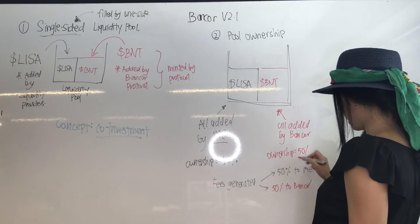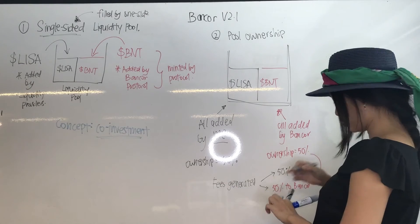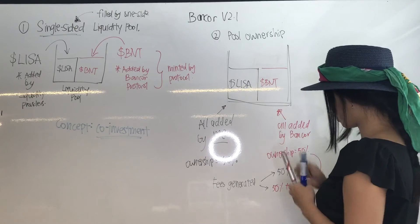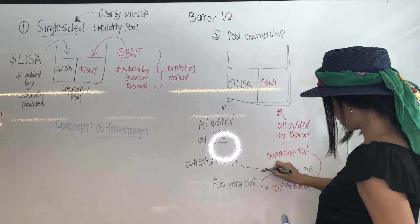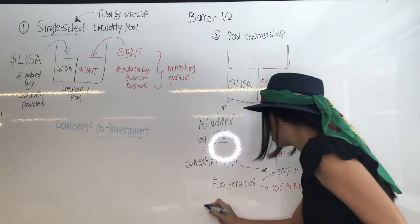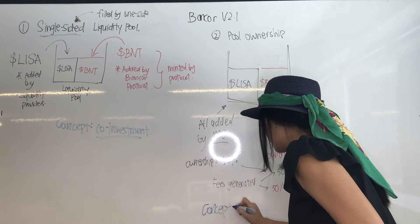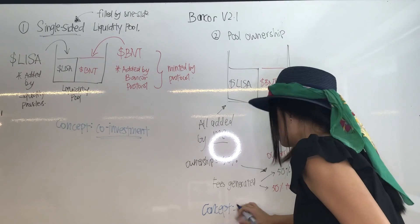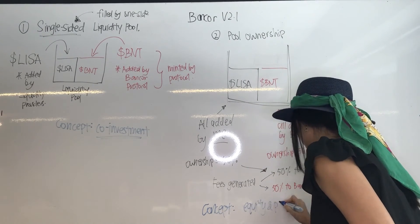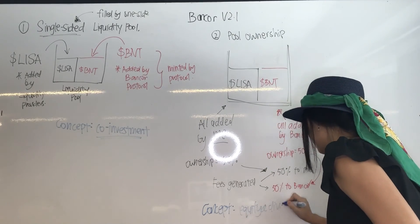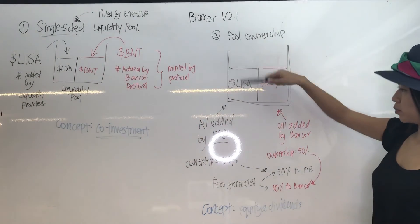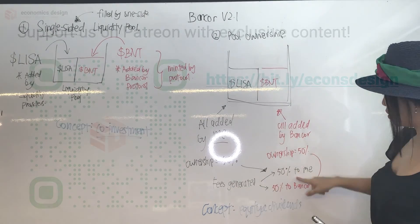So if the fees are ten dollars, five dollars goes to me and five dollars goes to Bancor the protocol itself. After that it will be translated to the token prices, but we'll talk about that later. For now, just understand that this is how pool ownership works: I own X percent of the pool, so I get X percent of the fees generated. The concept we're talking about here is equity and dividends.